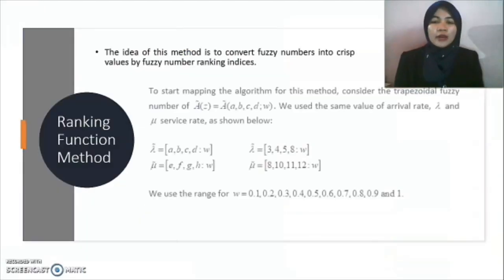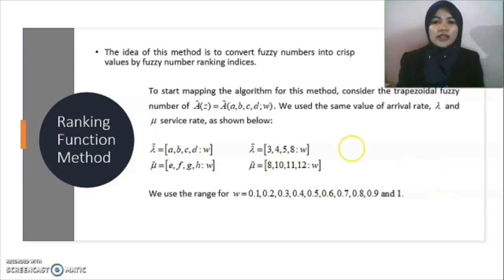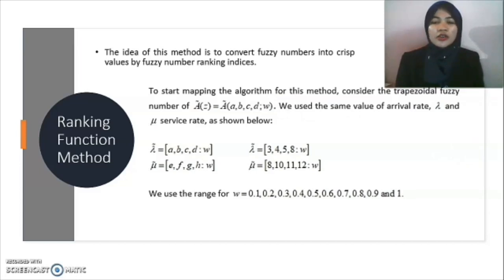We implement our data into the ranking function method. Firstly, consider the trapezoidal fuzzy numbers in this function and use the same values of arrival rate lambda and service rate mu as shown. The range for W used is 0.1, 0.2, 0.3, 0.4, 0.5, 0.6, 0.7, 0.8, 0.9, and 1.